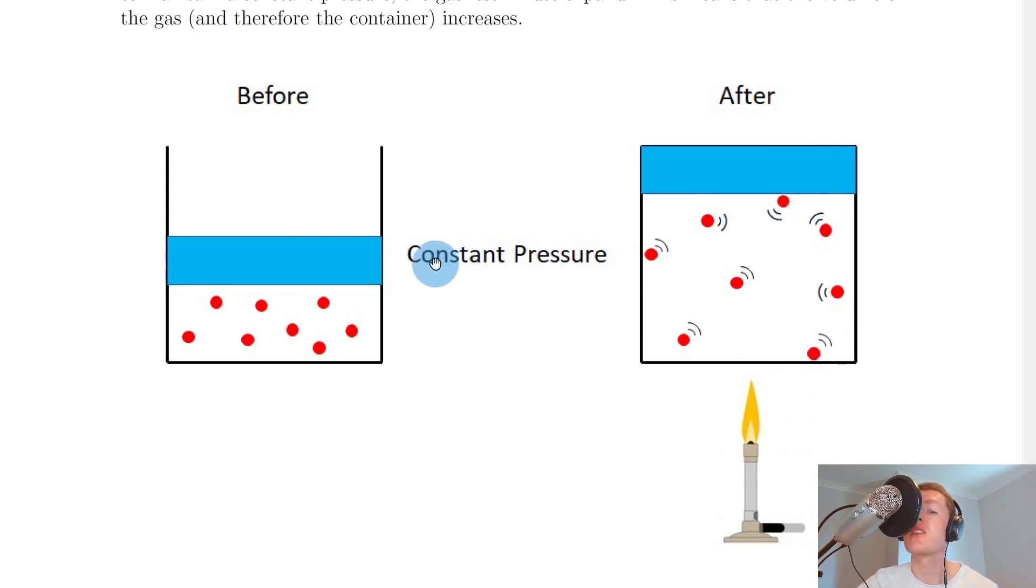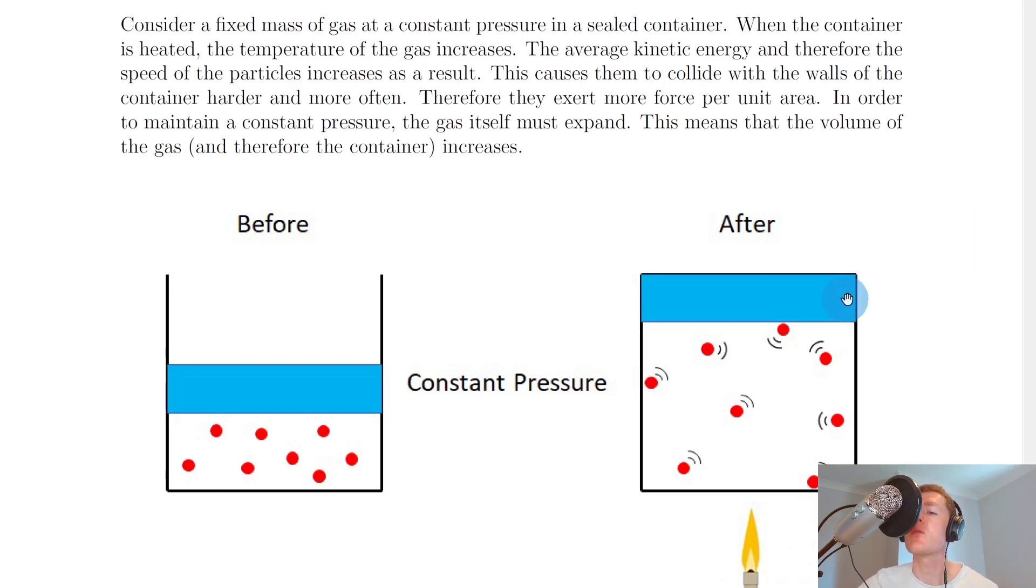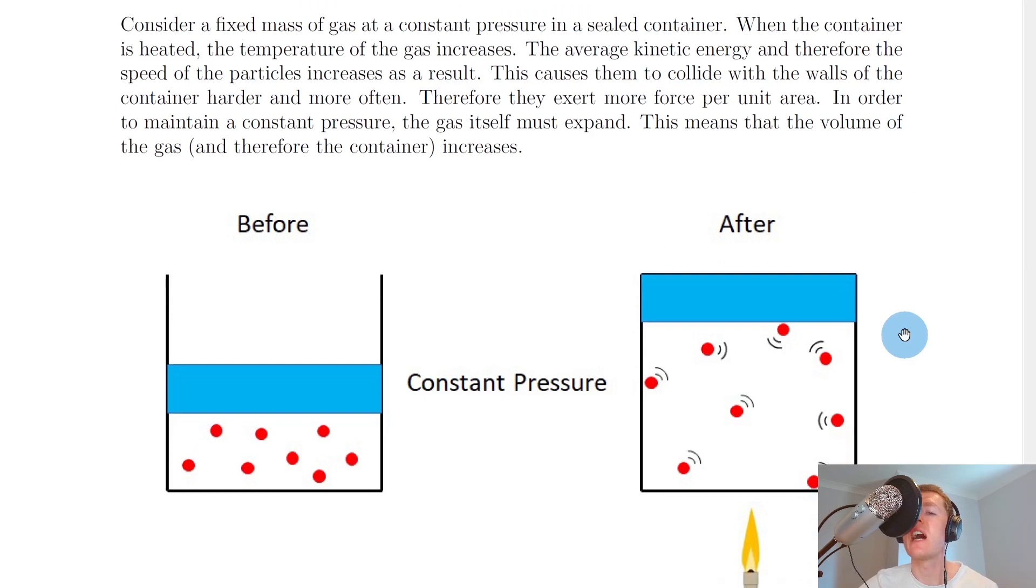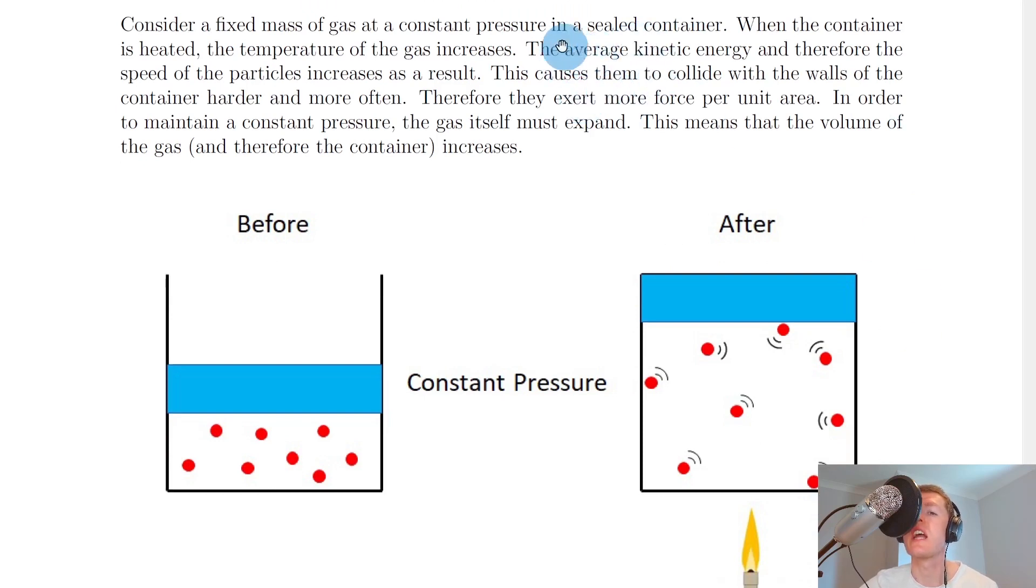So remember, we want to keep pressure the same, we want to keep it constant, and the only way to do that is to increase the volume of the container. So remember, if you're asked to explain Charles' law or the volume-temperature law using the kinetic model, then you need to mention the idea of an increased temperature causing an increase in kinetic energy, or average kinetic energy.